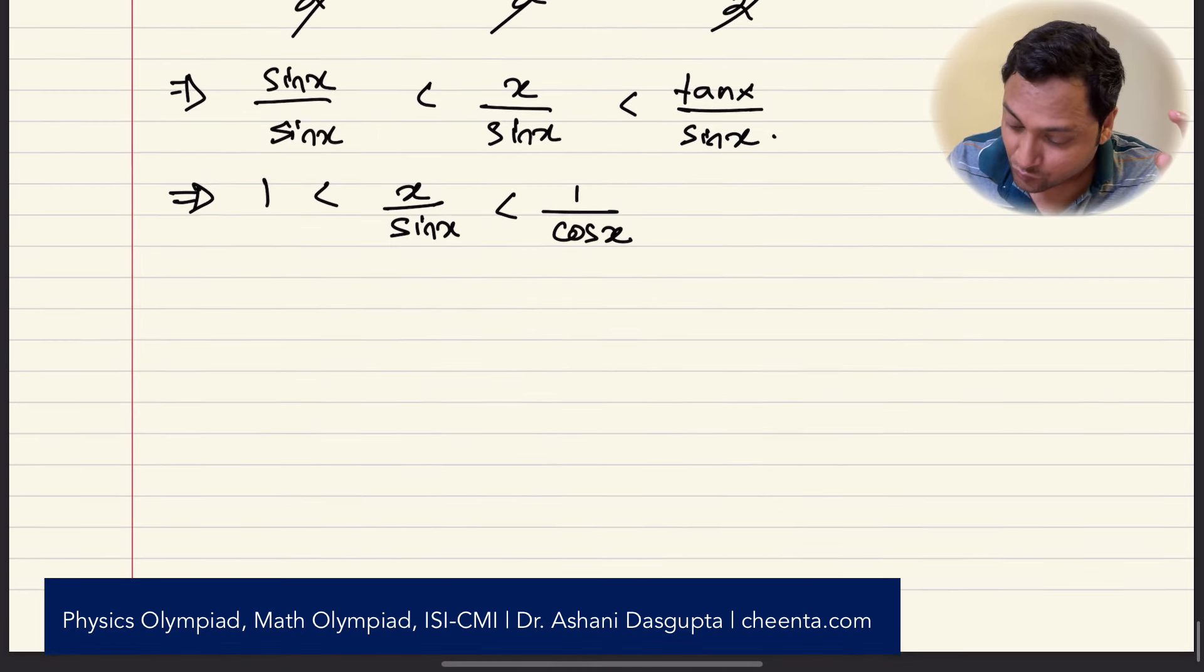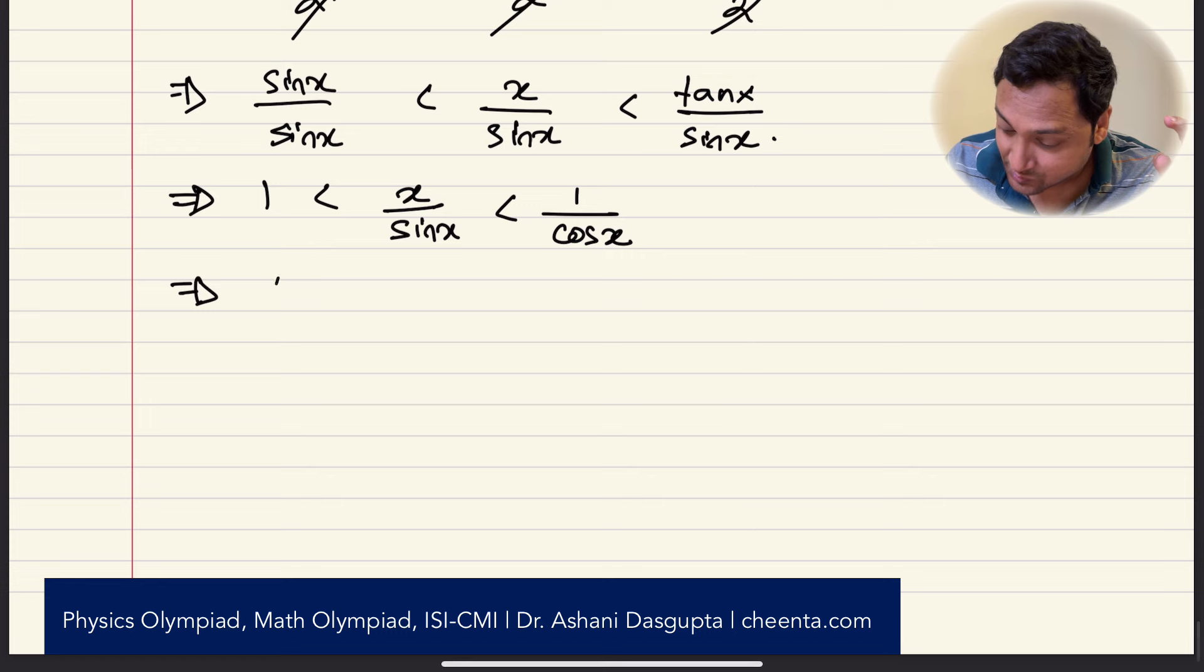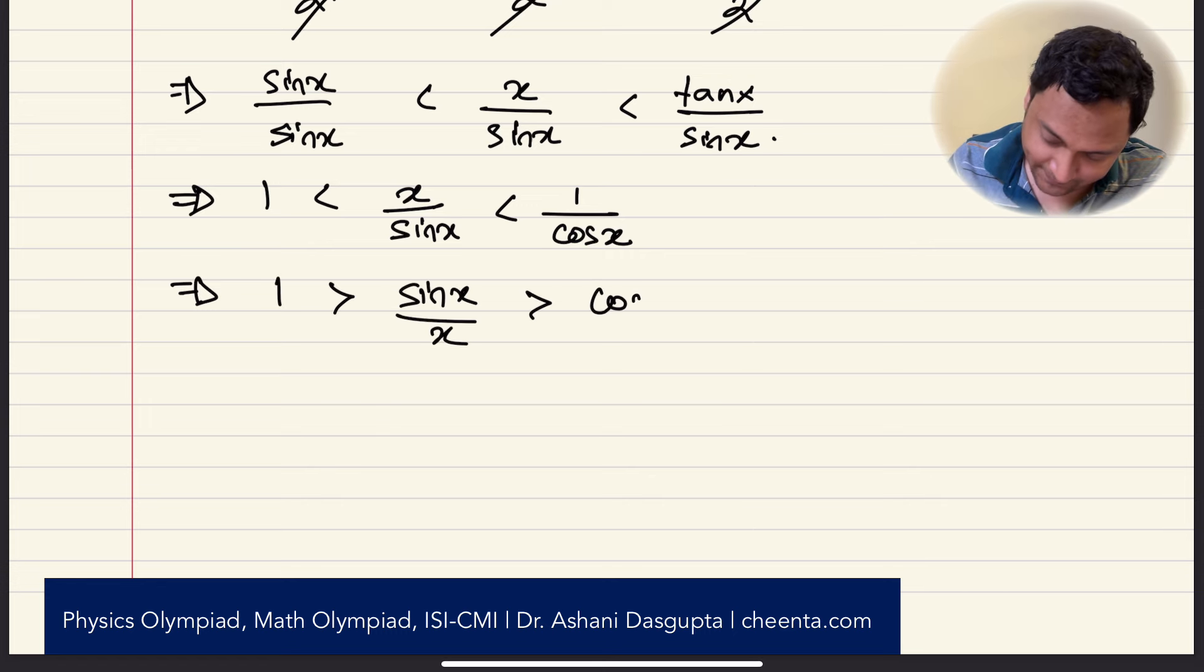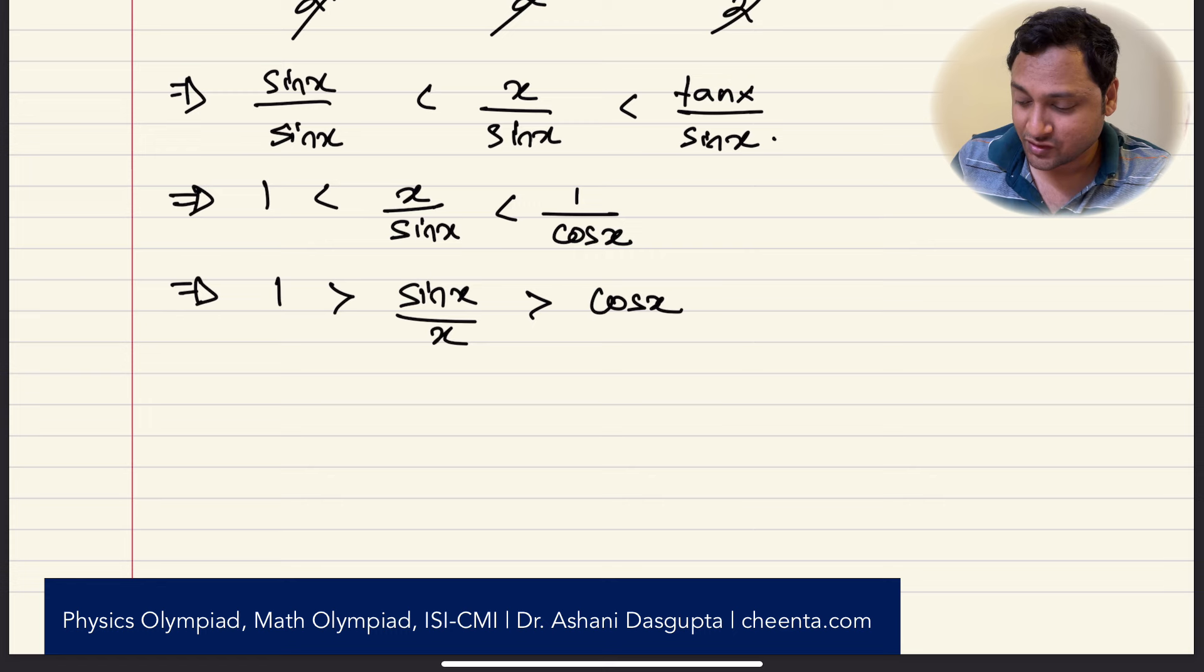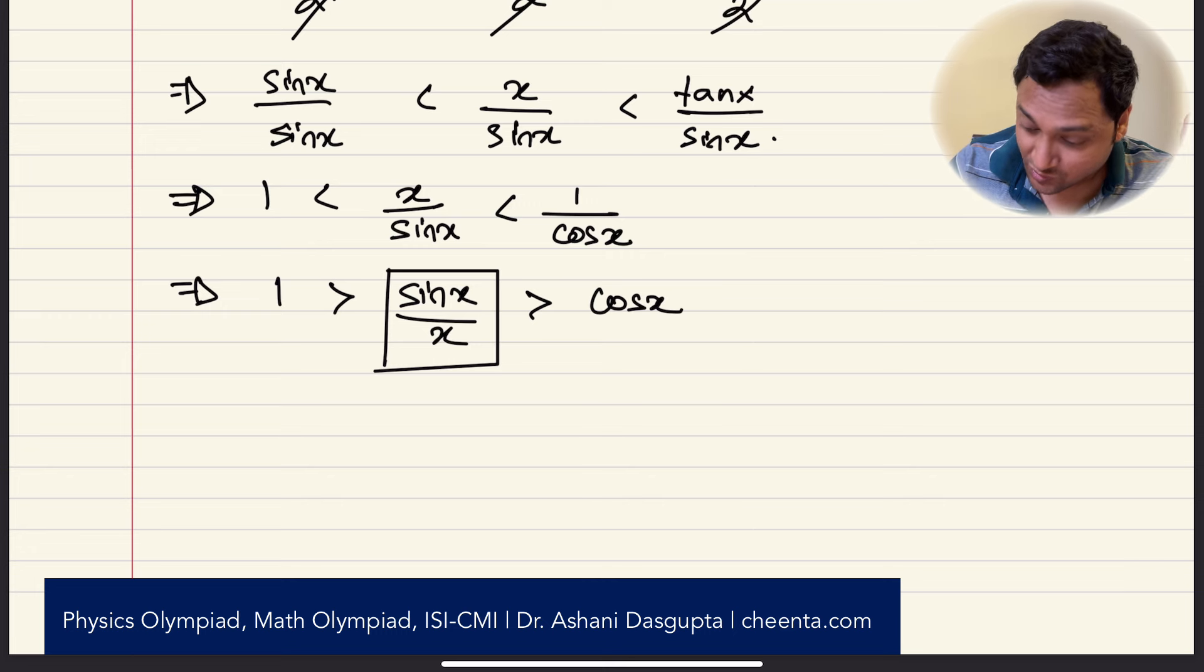Now if you flip it, what you'll get is 1 is greater than sine x over x, is greater than cosine of x. Okay, so now we are ready to use the sandwich theorem. What is the sandwich theorem? That if a sequence or an expression is sandwiched between two quantities, and if those two quantities go to the same value, then the stuff in the middle will also go to the same value.